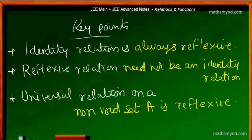Also, the universal relation on a non-void set is reflexive. We know that the universal relation consists of all possible combinations of elements pairing up to form ordered pairs — that is, the Cartesian product of the set with itself. Naturally, each element pairs with itself in this case, so the universal relation is reflexive.